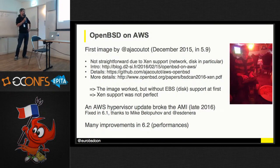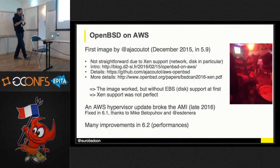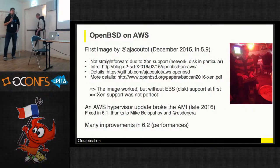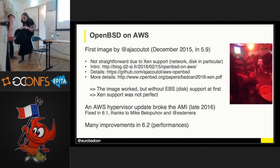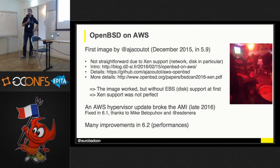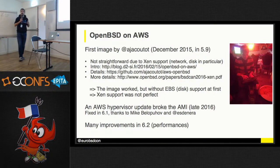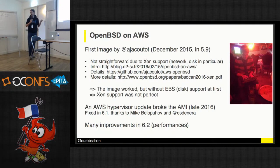It proved to be quite a challenge. He made an image fairly quickly at the beginning, but then discovered that due to lack of Xen support, many things were not working. The instance was booting but there was no network support initially. Thanks to a lot of work by Mike at SDNera, all this Xen support progressed over time. By the beginning of 2016, there was the first OpenBSD image working on AWS. Links on the slides point to the first image build, the GitHub repository with the code, and Mike's explanation of Xen support for OpenBSD.